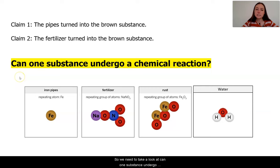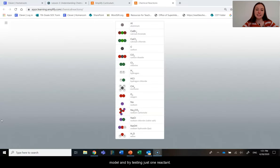So we need to take a look at can one substance undergo a chemical reaction? I'm going to go ahead and get back on the digital model and try testing just one reactant at a time and seeing whether there are any changes. So here I am back in laboratory A of the digital model. And remember, our focus question is, can one reactant undergo a chemical reaction? So can one thing change into something new and have a new product?